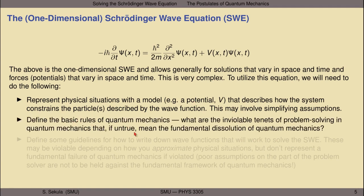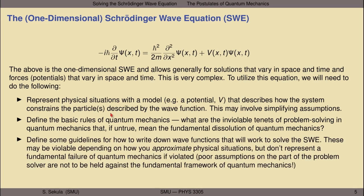We will define the basic rules of quantum mechanics — the inviolable tenets of problem solving that, if untrue, mean the fundamental dissolution of quantum mechanics. We'll also define some guidelines for how to write down wave functions that will work to solve the Schrödinger wave equation in a specific situation. These guidelines may be violable depending on how you approximate physical situations, but don't represent a fundamental failure of quantum mechanics if violated. Poor assumptions on the part of the physicist are not to be held against the fundamental framework of quantum mechanics.